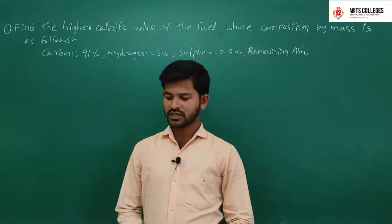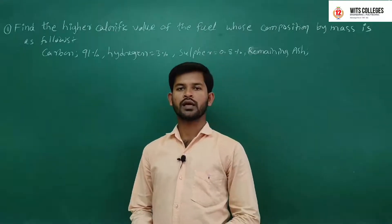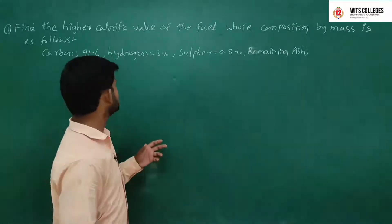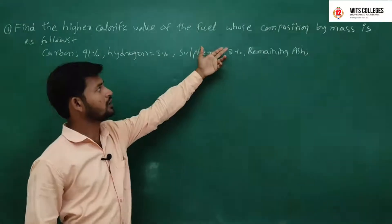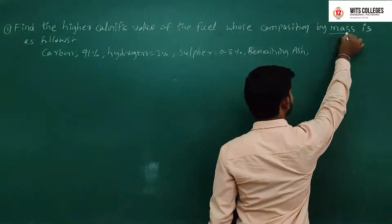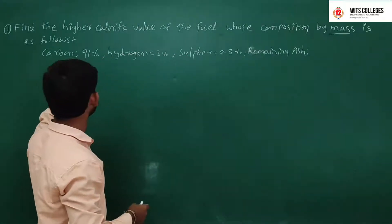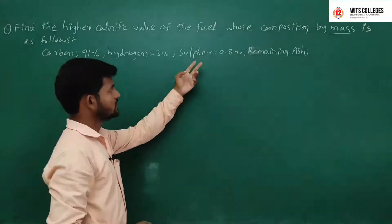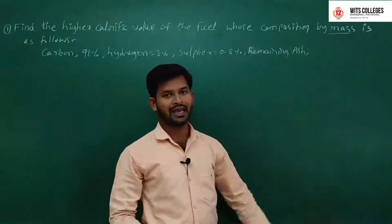Today's class, we have discussed about problems of higher calorific value and lower calorific value. In this first problem of higher calorific value, we are given: find the higher calorific value of the fuel whose composition by mass is as follows — carbon 91%, hydrogen 3%, sulphur 0.8%, remainder is ash.